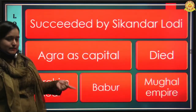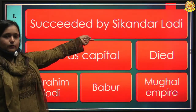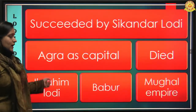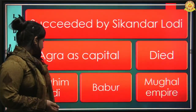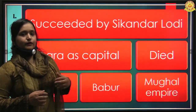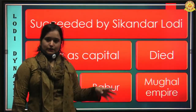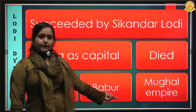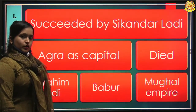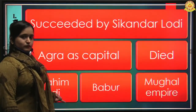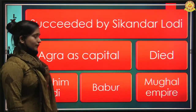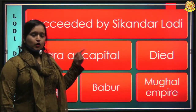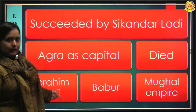After Sikandar Lodi died, his son Ibrahim Lodi became sultan. During Ibrahim Lodi's reign, the Mughal ruler Babur, who was ruling over the Kabul and Afghanistan region, attacked. Because the capital had been shifted to Agra, the sultanate was also referred to as the Agra Sultanate. Babur attacked and defeated Ibrahim Lodi, capturing the Lodi dynasty's empire.